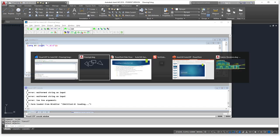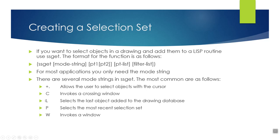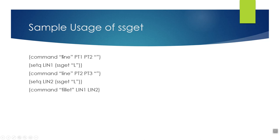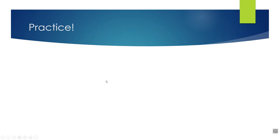Here's a more practical use: inside a LISP routine, draw a line from pt1 to pt2, end the line, then setQ line1 to (ssget "L") — L selects the last object created, holding that line as a variable. Repeat for pt2 to pt3 and call it line2. Then run the fillet command with line1 and line2 as arguments, and it automatically fillets them and exits. That's one practical way to use ssget inside a routine.